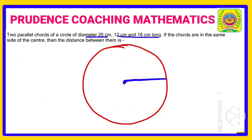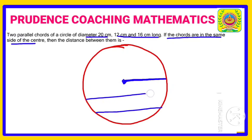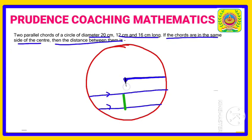The chords are on the same side of the center. If we draw both chords on the same side, they are parallel to each other — meaning if we extend both lines, they are not going to meet. We need to find the distance between them. If we draw a straight line from the center perpendicular to each chord, it will be 90 degrees, and this perpendicular line will bisect each chord.